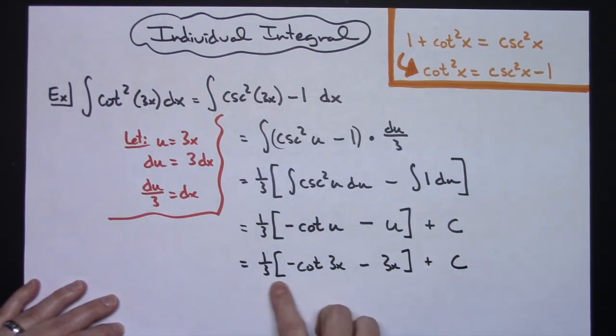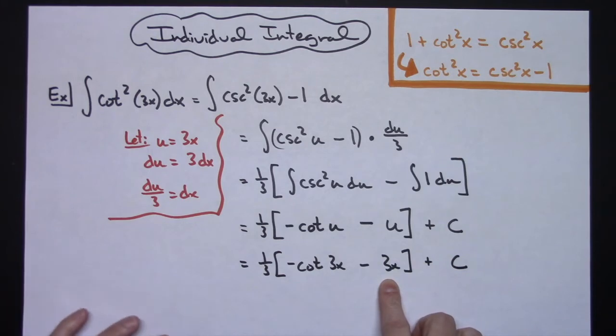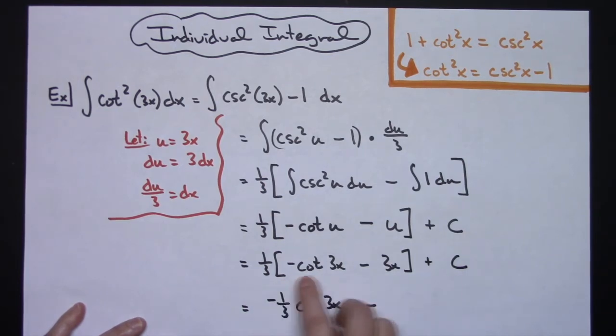And then to clean this up a little bit further I would probably go ahead and distribute that 1 3rd making it a negative 1 3rd cotangent 3x minus taking that 1 3rd times that 3 there will just give me the x and then plus c.